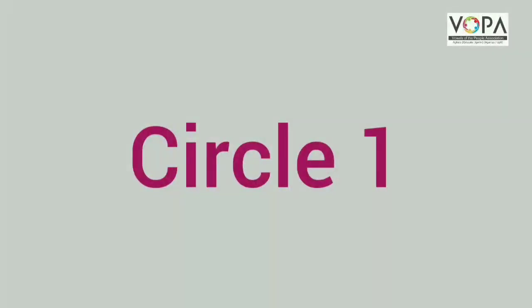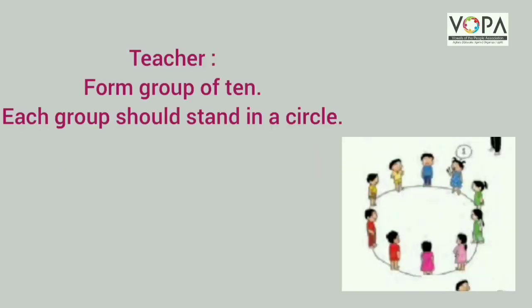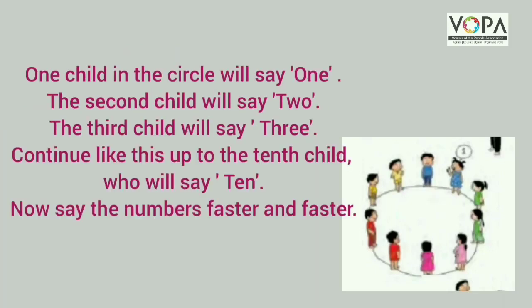Circle 1 Yattachouti. Listen carefully. An active teacher forms a group of 10. Each group should stand in a circle. One child in the circle will say 1, the second child will say 2, the third child will say 3. Continue like this up to the 10th child who will say 10.